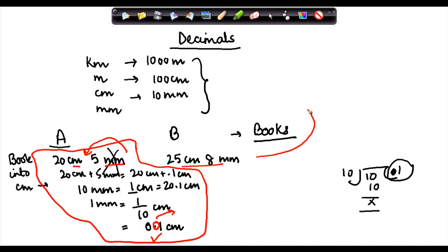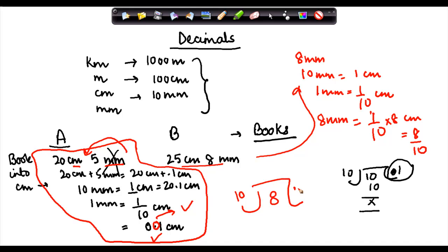Similarly, if I were to try this for this, let us see. 8 millimeter. So I know 10 mm is equal to 1 centimeter. Therefore, 1 mm is equal to 1 by 10. The same logic as we had used here. 8 mm is equal to 1 by 10 into 8 centimeter or 8 by 10 centimeter. Again, I perform the same part. 10 doesn't go. I put on a point. I get 0 here. 8 times gives me 80. So this is equal to 0.8 centimeter. And 0.8 centimeter when added to 25 will give me 25.8 centimeter.